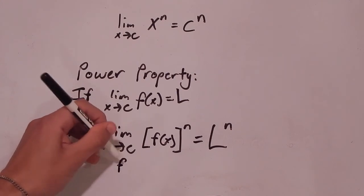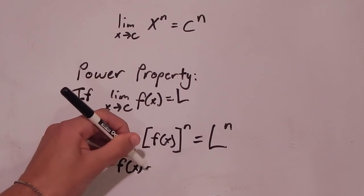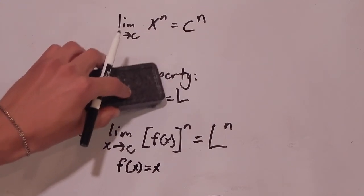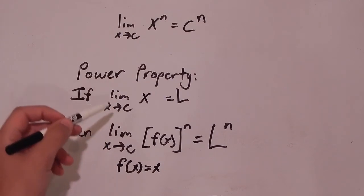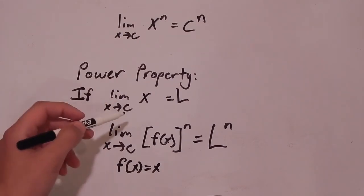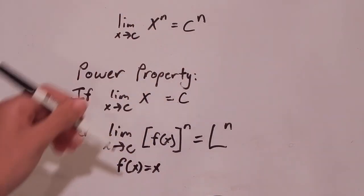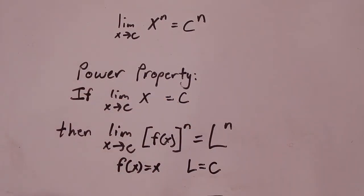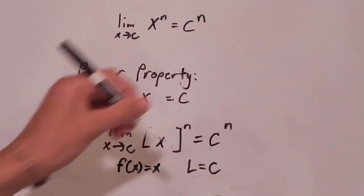It's just a specific case in that we set f of x equal to x. When we set f of x equal to x, we can change the expression accordingly. And in the previous limit, just a few minutes ago, we proved that the limit as x approaches c of x is equal to c. So f of x is equal to x, and L is equal to c. Then, by the power property, we can say that the limit as x approaches c of x to the n is just equal to c to the n.